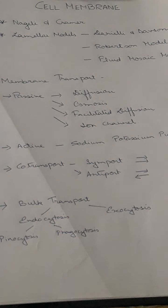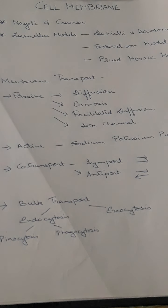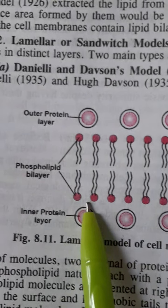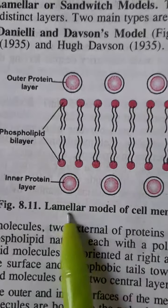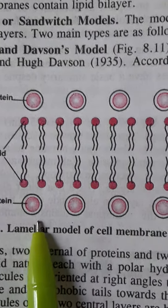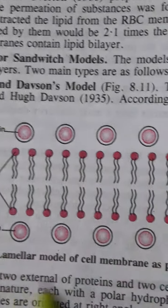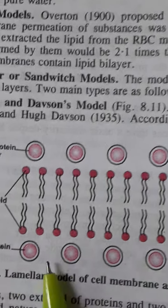The first model is the Danieli-Davson model, proposed by James Danieli and Hugh Davson. This was the first model ever proposed related to cell membrane structure. According to this model, a cell membrane consists of four molecular layers — two phospholipid and two protein layers. The phospholipid bilayer is covered on either side by a layer of hydrated globular alpha-protein molecules. In the diagram you can see the phospholipid bilayer and the alpha-protein molecules present on the outer sides.